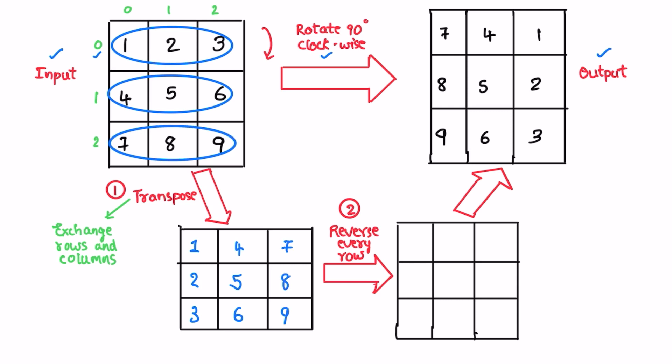Now we have the transpose of the input matrix. You can find a little similarity between this and the output array. In the transpose, the elements are displayed from right to left — for example, here they are displayed as 1, 4, 7 and in the output as 7, 4, 1. The rest of the elements follow the same trend, which means we have to reverse each row inside the transpose matrix. So the next step is to perform a reverse operation on every row. This first row, 1, 4, 7, will be displayed as 7, 4, 1.